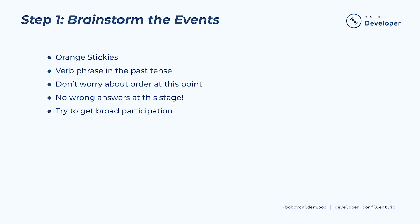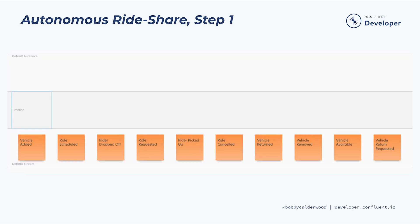Now that we've settled on a definition of business event, let's capture some in our event model. The first step is to brainstorm our events. The goal at this step is broad participation, and there are no wrong answers at this stage. Invite the participants to write verb phrases in the past tense on orange stickies, and get as many on the board as possible in a fixed period, say 15 minutes. Here's what our autonomous ride-share model might look like after the first step — lots of events, out of order, probably some duplicates and wrong answers, but it's a great start.